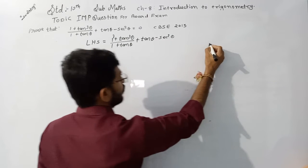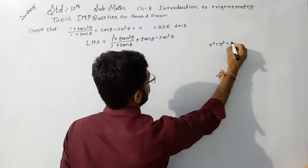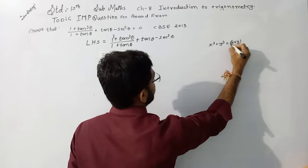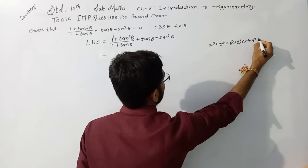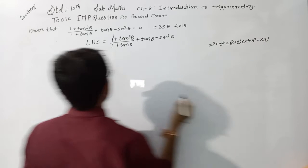We use the formula: x cube plus y cube is equal to (x plus y) into (x square plus y square minus xy).